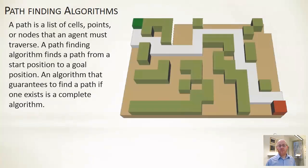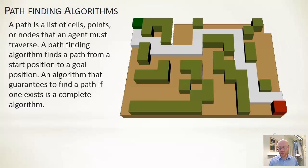Let's think about what we want our algorithm to output: a path — a list of cells, points, or nodes — given to an agent to follow from the current position to the destination. If there is a path and our algorithm is guaranteed to find it, it is known as a complete algorithm. Time and effort are the two factors we ideally want to minimise.